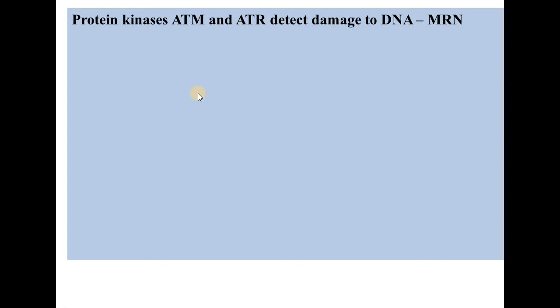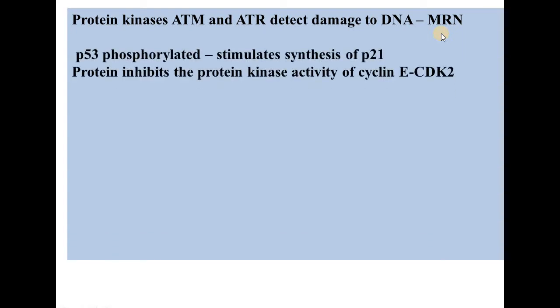Two protein kinases — ATM and ATR — detect DNA damage. This process is signaled by the presence of the MRN protein complex, which is the overall mechanism sensor. Once the MRN complex signals the damage, it can phosphorylate and activate p53, which then stimulates synthesis of the p21 protein — the example of CDK inhibition we discussed in previous lectures.